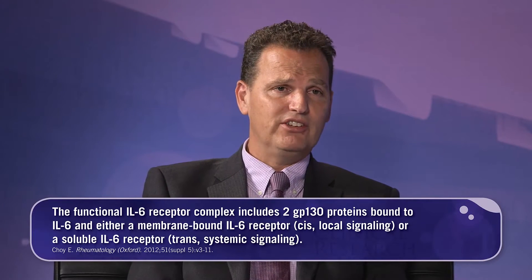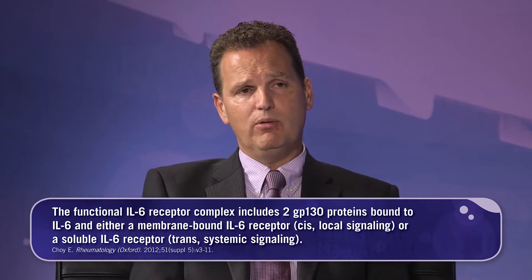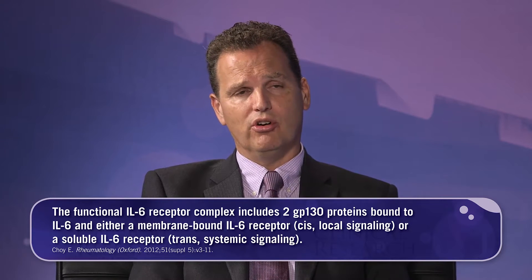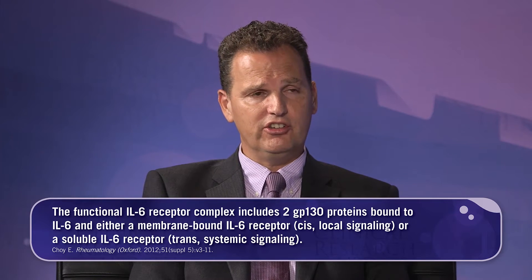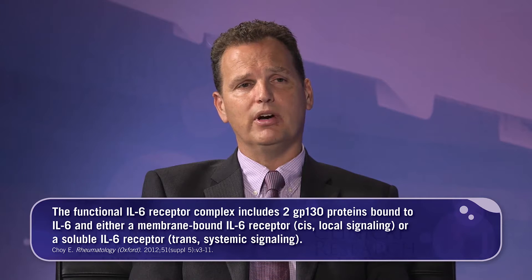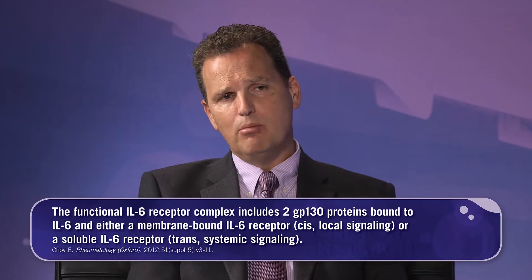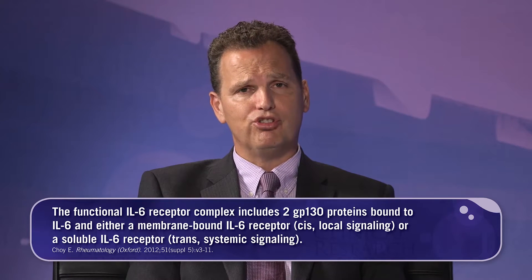This allows IL-6 and its soluble receptor to influence the function of many target cells, even those that don't have the pure IL-6 receptor on their surface — we refer to that as trans signaling. If GP130 and soluble IL-6 receptor are on the same cell, that is cis signaling; but if IL-6 binds to the soluble receptor and then binds to GP130 on a different cell, that becomes trans signaling, influencing the biology of a large number of relevant cells — for example, fibroblasts, osteoclasts, and a whole range of leukocytes.